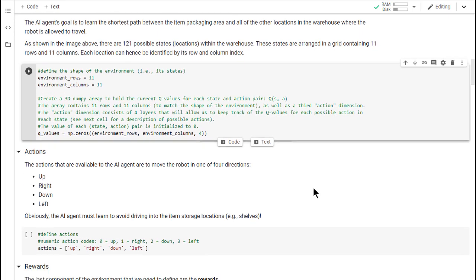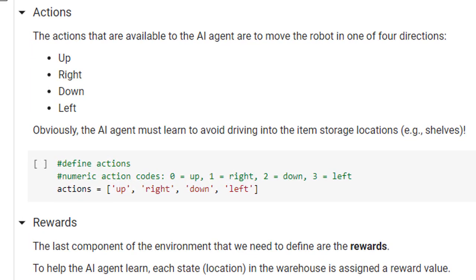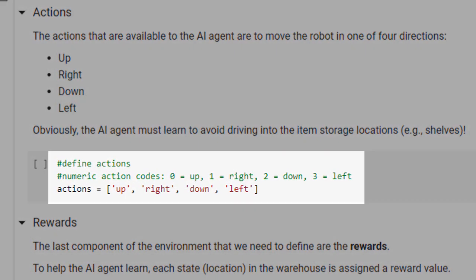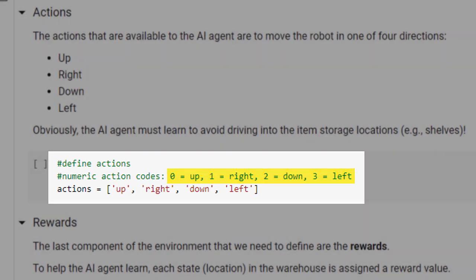Next, we'll define the four actions that our AI agent may take: up, right, down, and left. Based on its index location in the actions list, each action will be associated with a numeric code. Zero will mean up, one will mean right, two will mean down, and three will mean left.